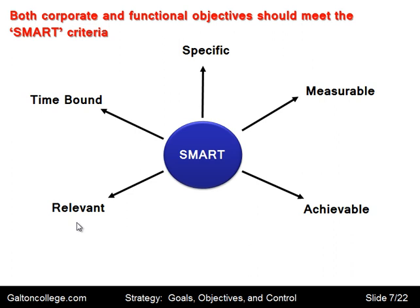It must be relevant — R in SMART. The workforce must see the objective as relevant to them, to the department, and to the business. If it's relevant to some external objective rather than the business, the workforce will not be motivated; they will not want to participate. And finally, T — it must be time-bound. It must have some completion date. Sales must increase by 20% in the next year, for example. To say sales must increase by 20% without a timeframe doesn't convey enough — is that immediate, or over the next 10 years? Some time dimension must be included.